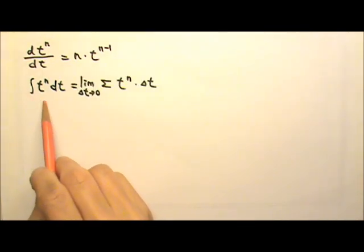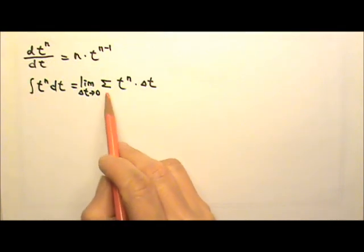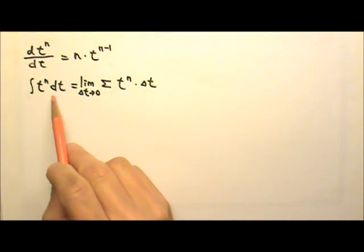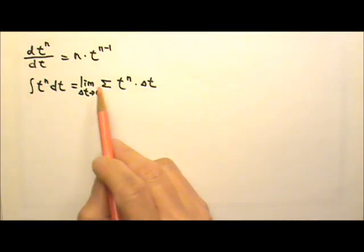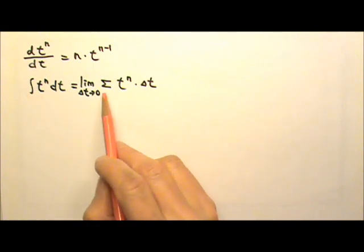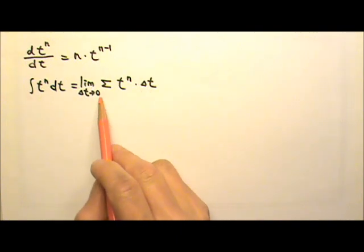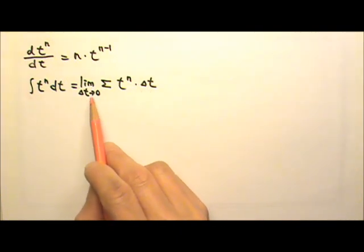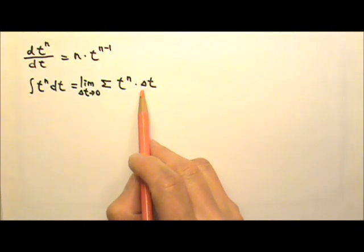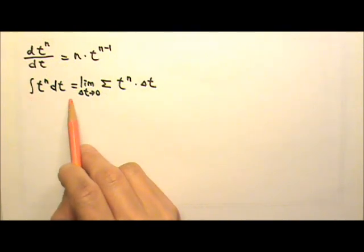Remember that the definition of integration is this. To integrate means to add, so the integration sign means the sum of. The t to the nth dt means t to the nth times delta t. When we add up t to the nth times delta t under the limit that delta t is so small that it approaches zero, we change the capital delta to the lowercase d, and we have the definition for integration.